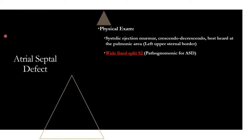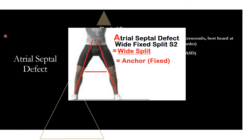To remember this: ASD is the only congenital heart disease starting with A. Picture the letter A as someone with legs wide spread open doing a wide split — so A makes you think of a wide split. Also, A in atrial septal defect stands for 'anchor' — you can't move an anchor, it's fixed in position. That's how to remember ASD has a wide fixed split S2.